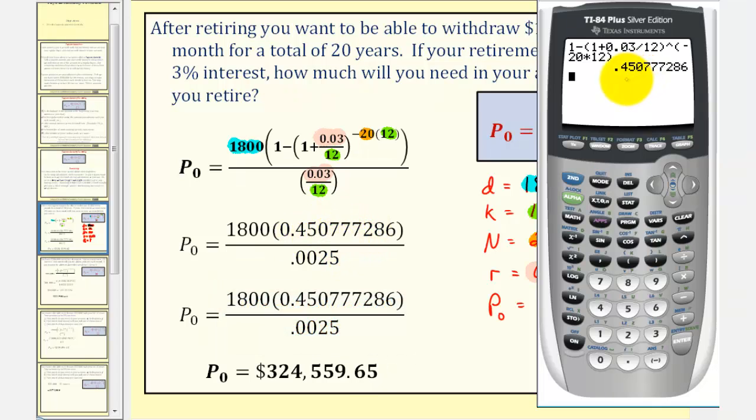We could round to three significant digits, but the more decimal places we use, the more accurate our answer. Our denominator is going to be 0.03 divided by 12, which is 0.0025.